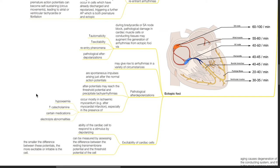Excitability of cardiac cells refers to the ability of the cardiac cell to respond to a stimulus by depolarizing. This can be measured by assessing the difference between the resting transmembrane potential and the threshold potential of the cell. The smaller the difference between these potentials, the more excitable or irritable is the cell.